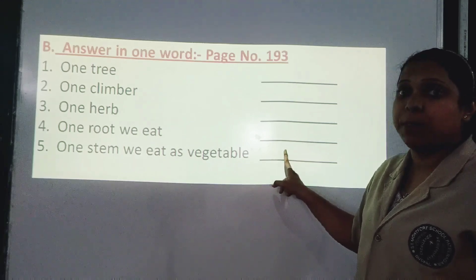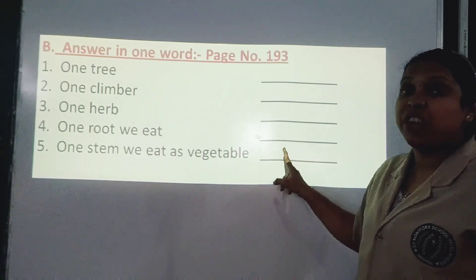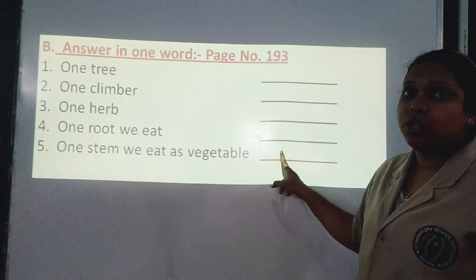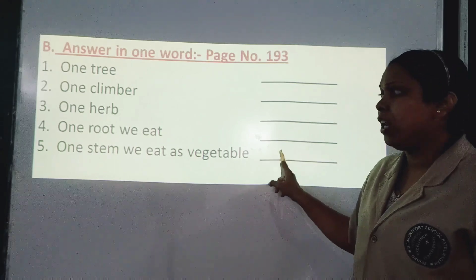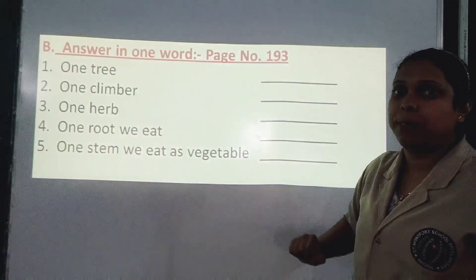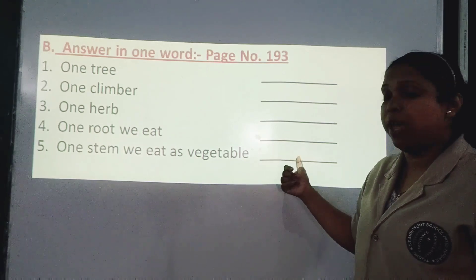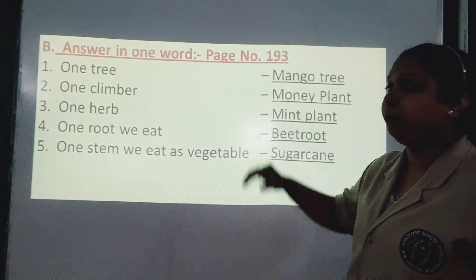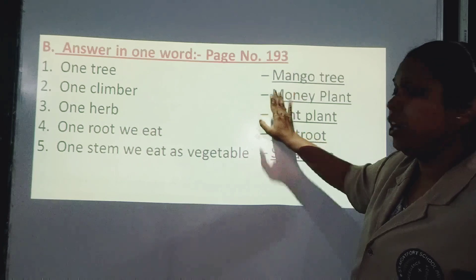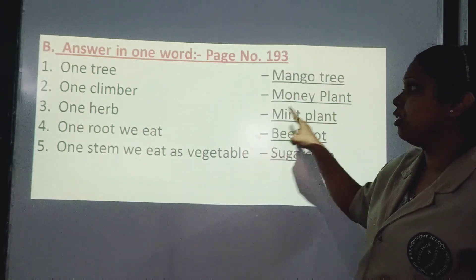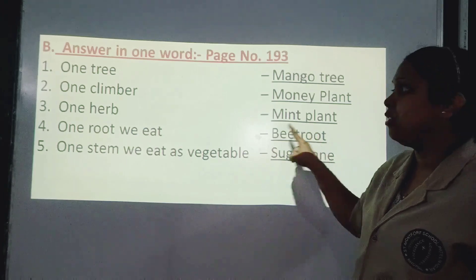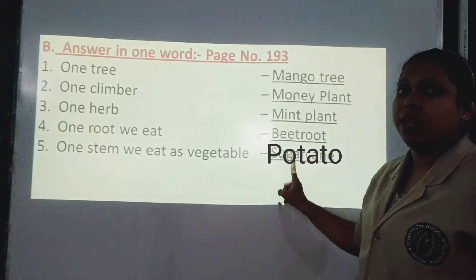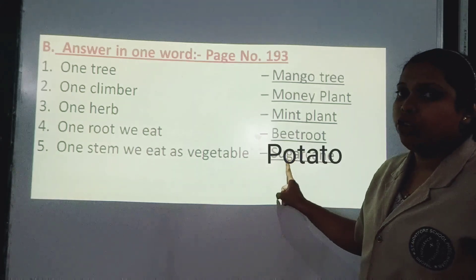One stem we eat as vegetable — can sugarcane come here? Sugarcane is a stem, but we don't eat it as a vegetable. So write potato here. The answers are: one tree — mango tree; one climber — bean plant; one herb — mint plant; one root we eat — beet root; and one stem we eat as vegetable — potato.